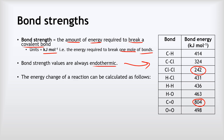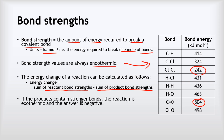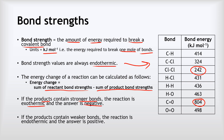To calculate the energy change of a reaction it's really straightforward. All we do is add up the strength of all of the bonds in the reactants and take away the strength of all the bonds in the products. If the products contain stronger bonds the reaction is exothermic and the answer will be negative; if the products contain weaker bonds the reaction will be endothermic and the answer will be positive.